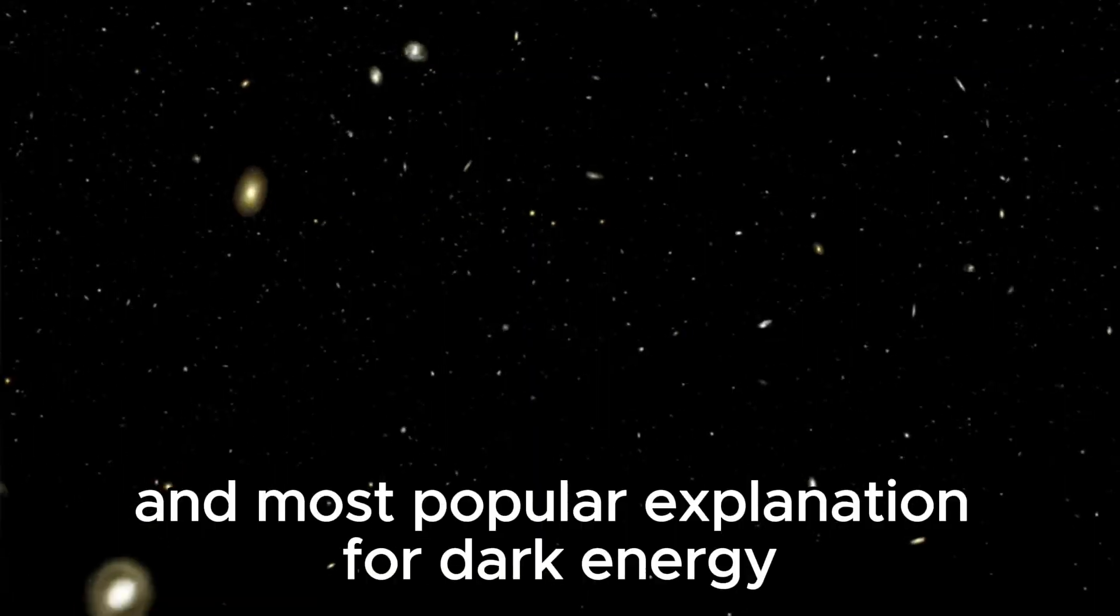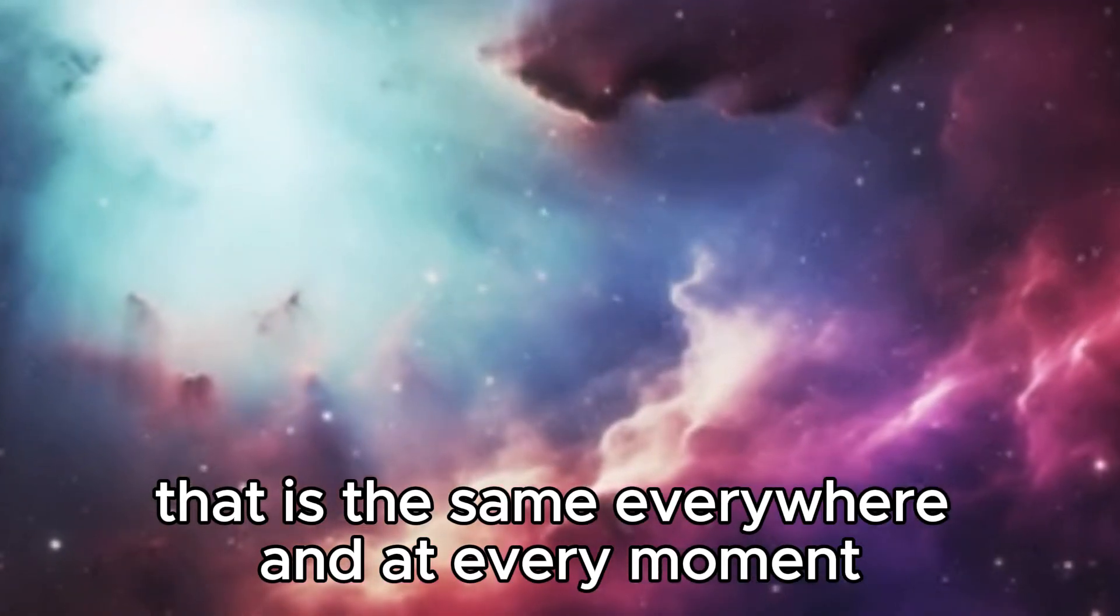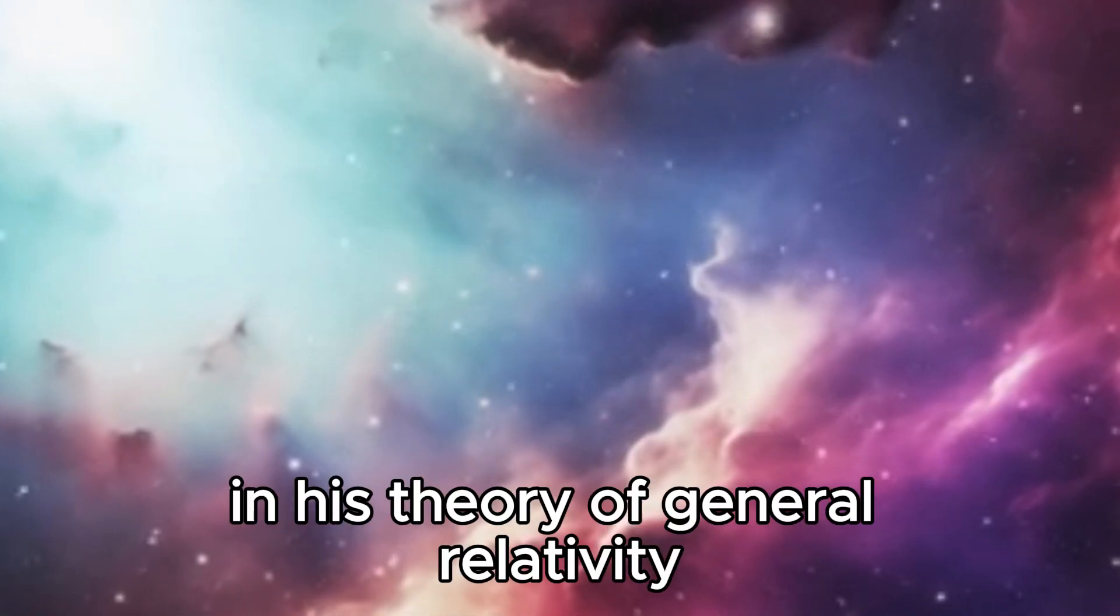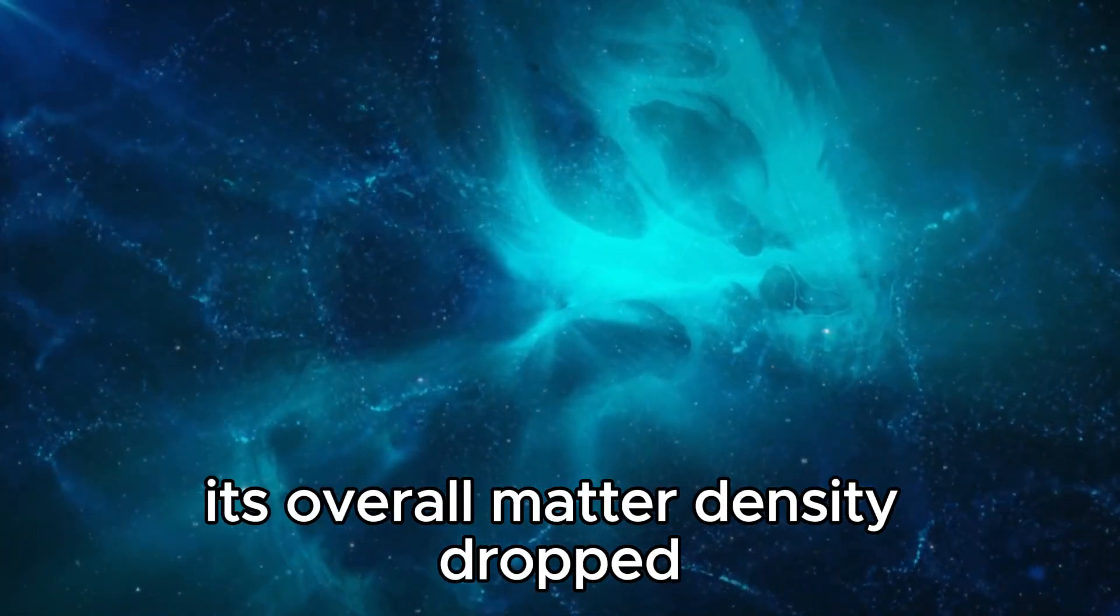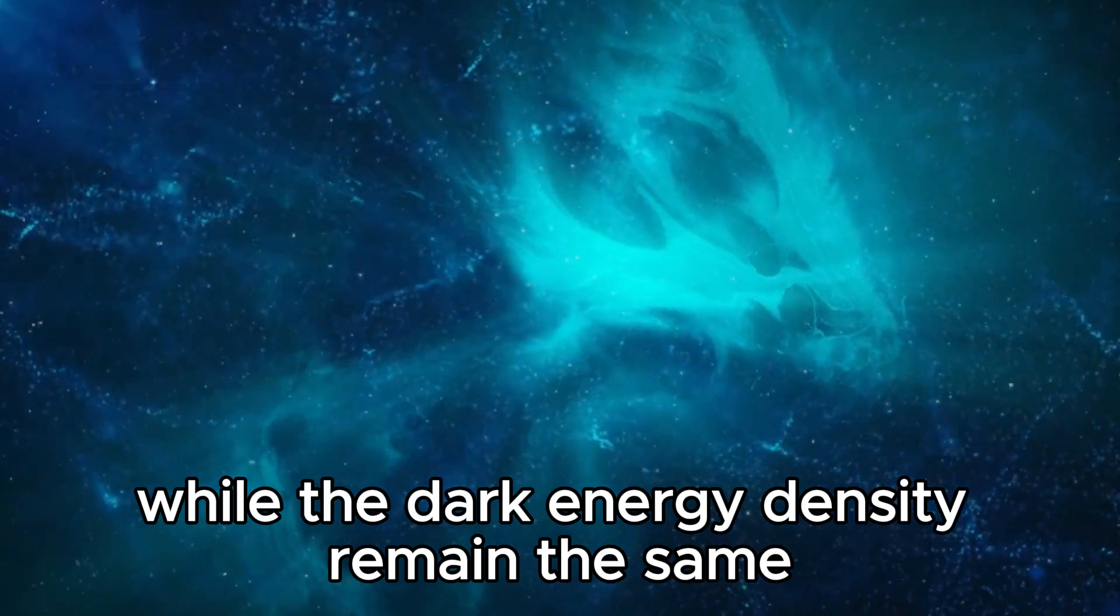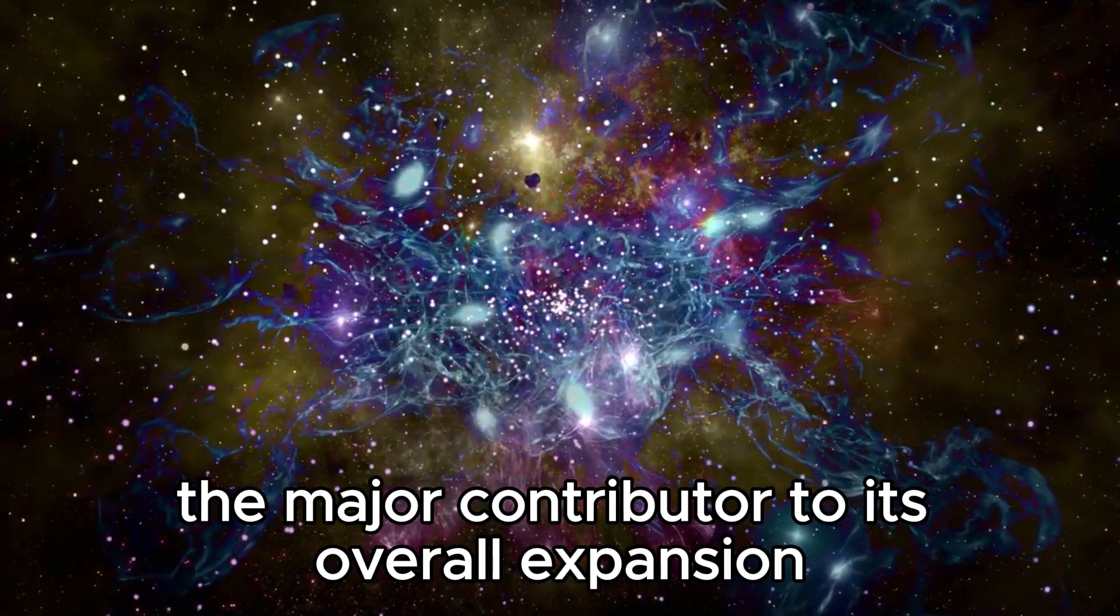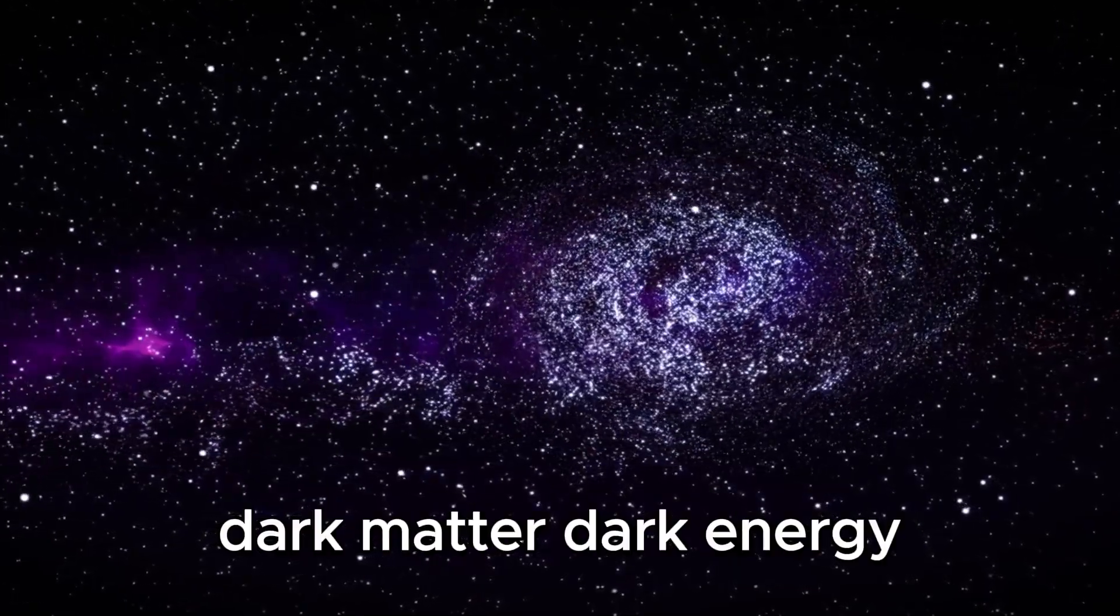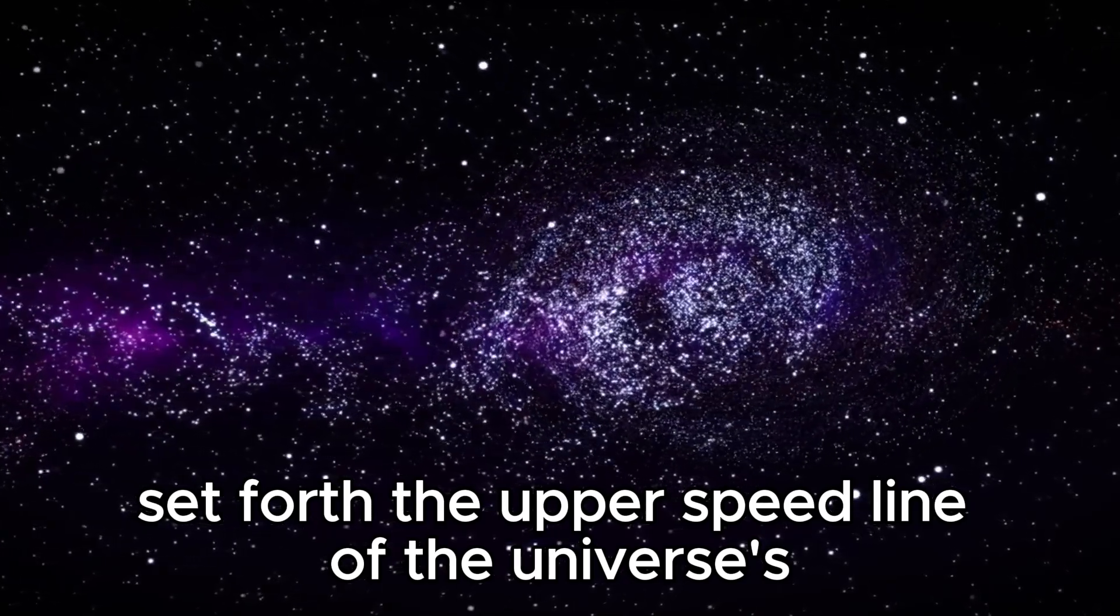The simplest and most popular explanation for dark energy is that it is a cosmological constant, an inflationary energy that is the same everywhere and at every moment, woven into the expanding fabric of spacetime. Einstein named it lambda in his theory of general relativity. As our universe evolved, its overall matter density dropped, while the dark energy density remained the same, increasingly making the latter the major contributor to its overall expansion. Added together, the energy densities of standard matter, dark matter, dark energy, and energy from light set forth the upper speed line of the universe's expansion.